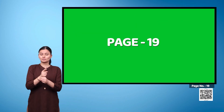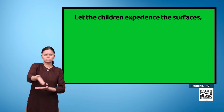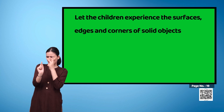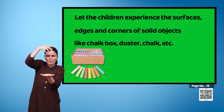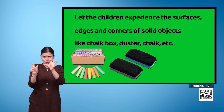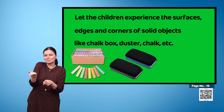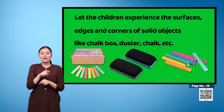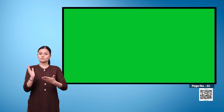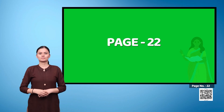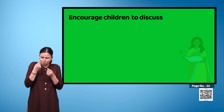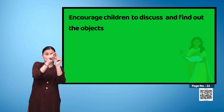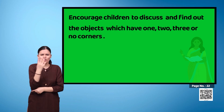Page 19 — Let the children experience the surfaces, edges, and corners of solid objects like a chalk box, duster, chalk, etc. Page 22 — Encourage children to discuss and find out the objects which have one, two, three, or no corners. They may make such objects using clay or dough.